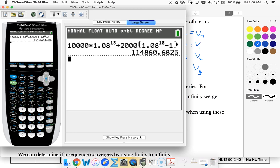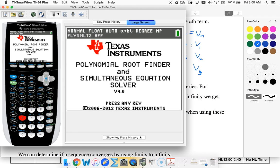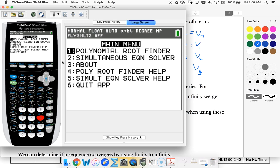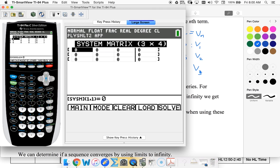So apps, polysimult, and now any key, simultaneous equations, we have 3 equations, and 3 unknowns. Next,